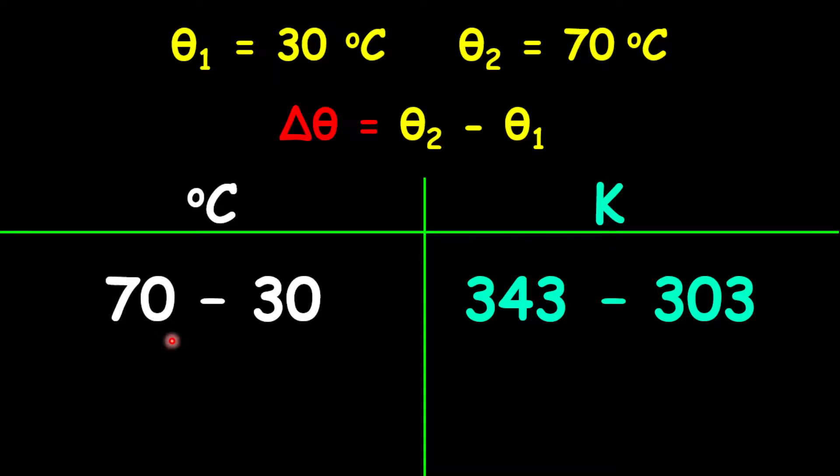70 minus 30 equals 40, while 343 minus 303 is also 40. So there is no need to convert from degrees Celsius to Kelvin when calculating a change in temperature.